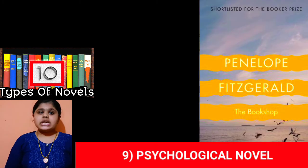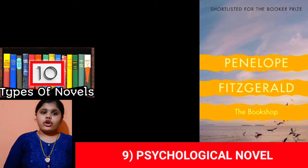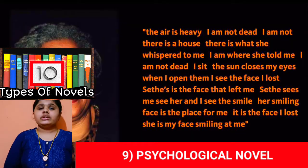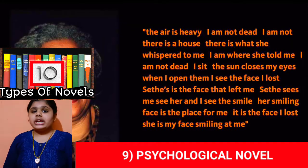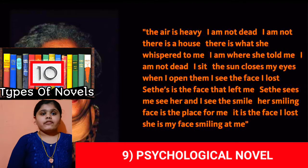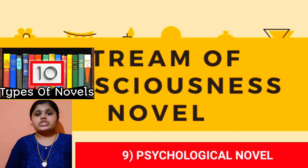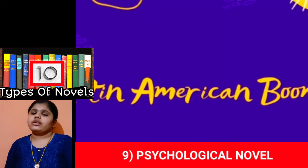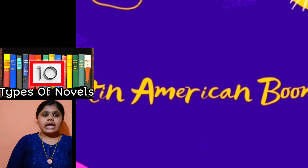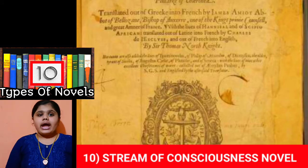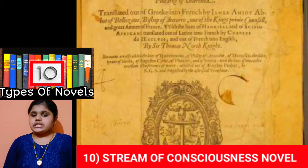The ninth type of novel is the psychological novel. The psychological novel is a work of fiction that treats the internal life of the protagonist, or even other characters, as much as external factors. The tenth type of novel is the stream of consciousness novel.